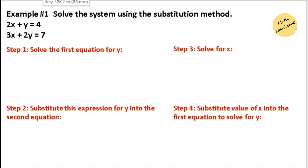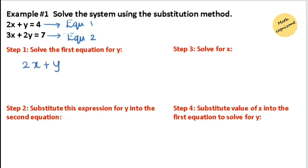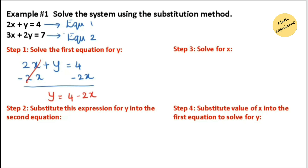Here is the first question: solve the system of equations using the substitution method. There are two equations given — let's name them equation 1 and equation 2. The first step is to find the equation for y. The first equation is 2x plus y equals 4. Now I'm going to subtract 2x from both sides, eliminating the x variable and finding the partial value of y, which gives us y equals 4 minus 2x.